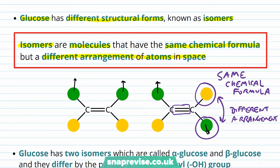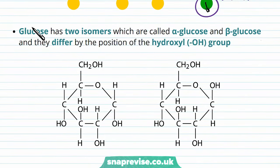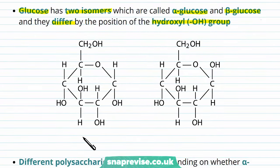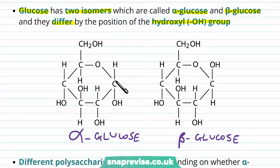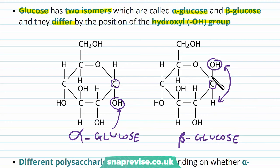The number of isomers something has is basically the number of different arrangements it can exist in. Glucose itself has two isomers: one called alpha glucose and the other called beta glucose. They differ by the single position of a hydroxyl (OH) group. Looking at the two structures, alpha glucose is on the left and beta glucose is on the right. They look very similar, but on the carbon on the right side, in alpha glucose the OH is on the bottom, and in beta glucose the OH is on the top. These two groups can't easily swap back because carbon bonds to four things, restricting rotation.